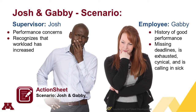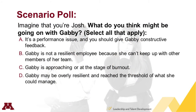We'll show a brief poll about what you think is up with Gabby. If you imagine you're Josh, what do you think is going on? A: it's a performance issue and you should give Gabby constructive feedback. B: Gabby is not a resilient employee because she can't keep up. C: Gabby is approaching or at the stage of burnout. Or D: Gabby may be overly resilient and has reached the threshold of what she could manage.